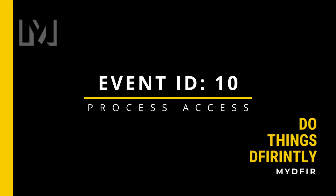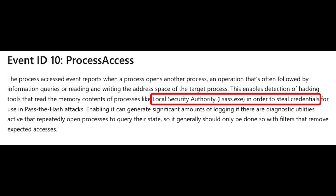Next is event ID 10, process access. This is a common event ID when looking for potential credential access towards the LSASS process, which is local security authority subsystem service. Attackers love to tamper with this process and attempt to read its memory because it can contain credentials, which could then be used to move laterally within the environment.